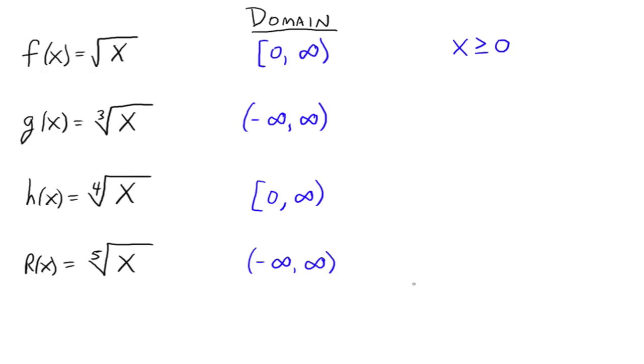We see the pattern that's going on here. If the index is even, then your radicand needs to be greater than or equal to 0. If the index is odd, well then, all real numbers will work. It doesn't matter if you have a positive number or a negative number underneath the radical, if your index is odd.